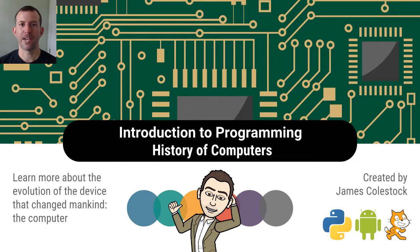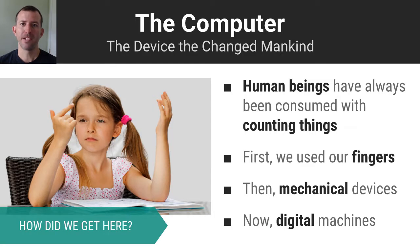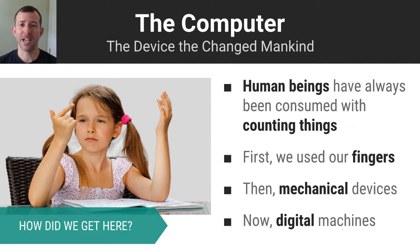Let's take a minute to talk about the device that changed mankind — the computer — and where it came from. Human beings have always been obsessed with counting things. When you were younger, you counted on your fingers, or digits. Now there are limits to what you can count on your fingers and what you can remember, so human beings started looking for solutions that could make counting and keeping track of things more efficient.